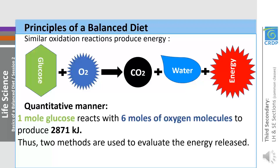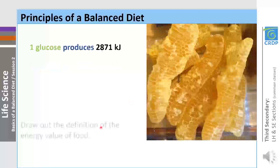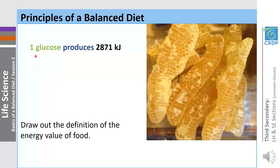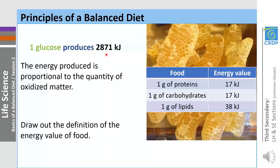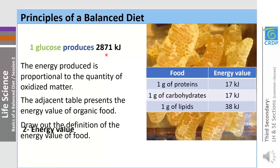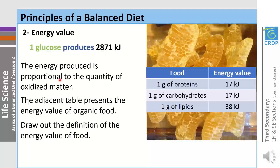You are kindly requested to pause the presentation here and answer the question. Every one mole of glucose reacts with six moles of oxygen and produces 2,871 kJ. How much energy is produced from 2 moles of glucose? Exactly: 2 times 2,871 kJ. So you can see that the energy produced is proportional to the quantity of oxidized matter.